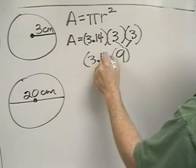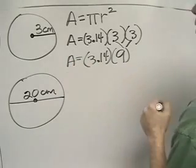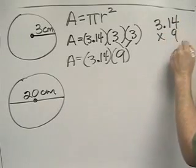so now we need to multiply 3.14 times 9 in order to get the area. So over here on scratch paper, we're going to multiply 3.14 times 9.